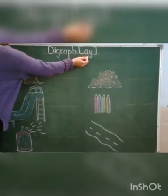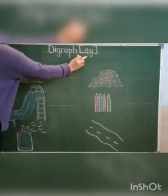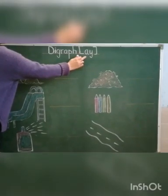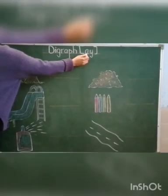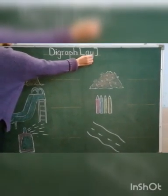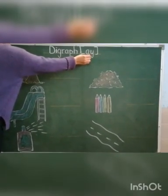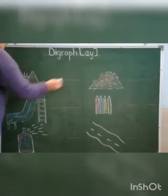A, Y, E. Which digraph is this? A, Y, E.